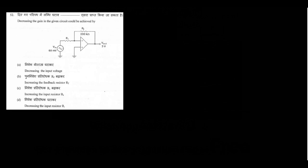Question 52: decreasing the gain in the given circuit could be achieved by... The gain of an inverting amplifier is given by Rf upon Ri. We can add a minus sign, but that doesn't matter — we need Rf upon Ri.